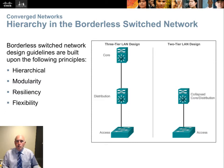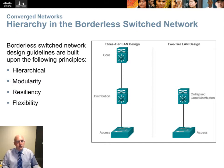The borderless network gives modularity where new functions can be added without having to tear down and rebuild the network. We want a network that is hierarchical, modular, resilient, and flexible. Keep those four words in mind for the chapter test — they will definitely test you on the advantages of a borderless network. The two-tier model exists for smaller networks that don't require a separate distribution and core. Those functions are compressed into a single core-distribution, handling both security and high speed.